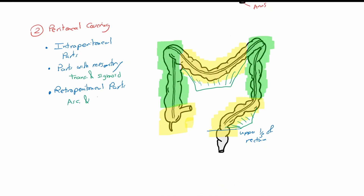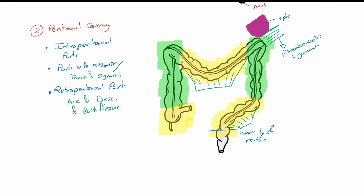The left or splenic flexure, which is slightly higher than the right or hepatic flexure, is attached to the diaphragm with the phrenicocolic ligament, on which the spleen rests. It is also attached to the spleen with the splenocolic ligament to the lower pole of the spleen.